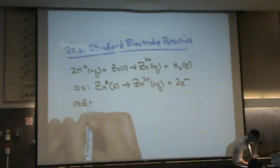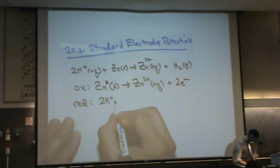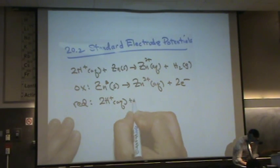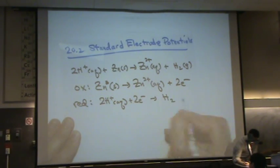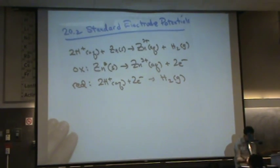And we've got a reduction half reaction. The reduction half reaction is 2H+ aqueous plus 2 electrons goes to H2 gas. So we've got our oxidation reduction.